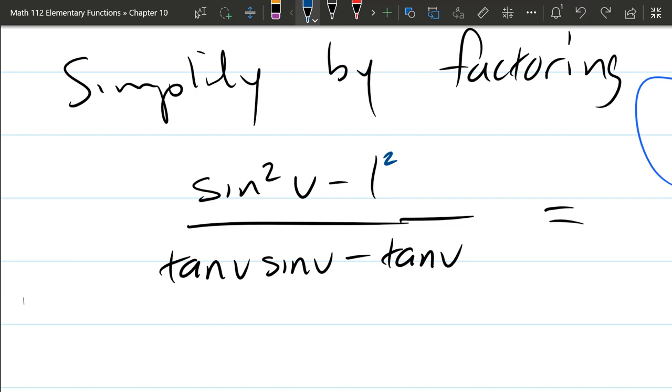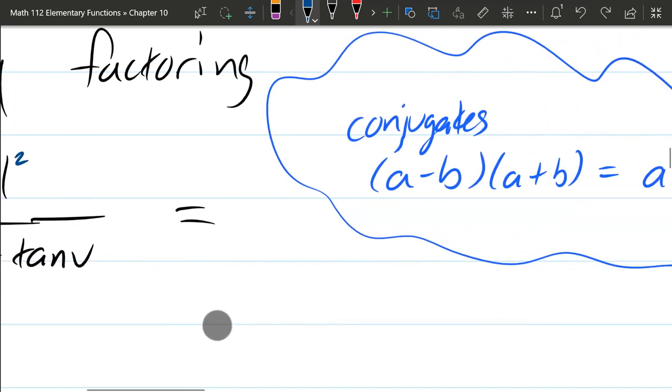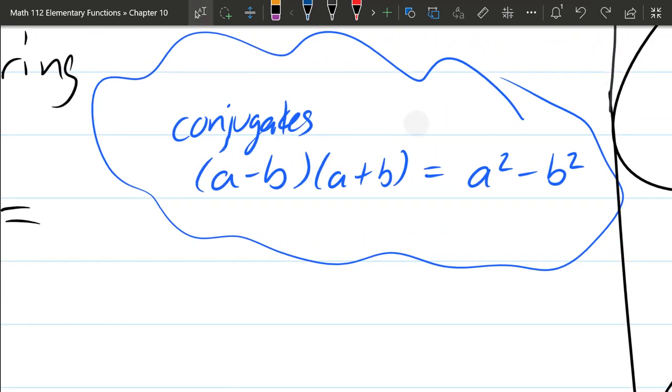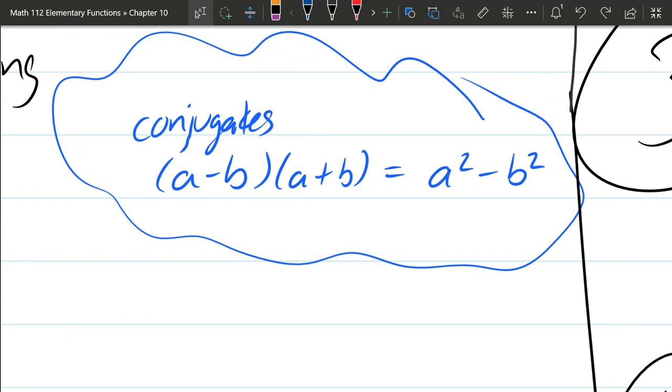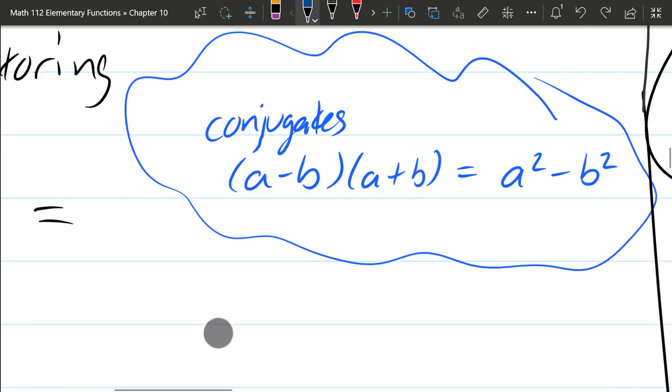And in the numerator we have difference of squares, also known as conjugate factors. So difference of squares, a squared minus b squared equals a minus b times a plus b. So we can factor this out to conjugates here.